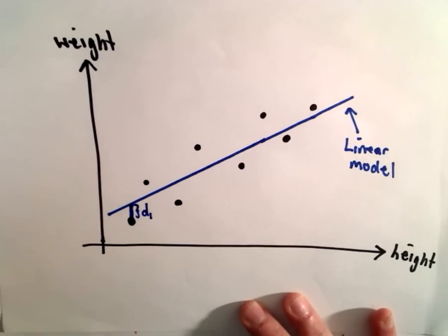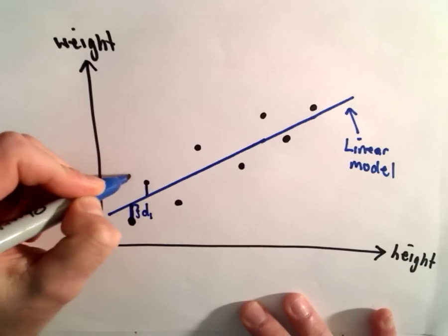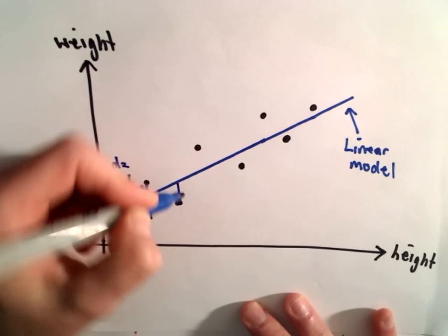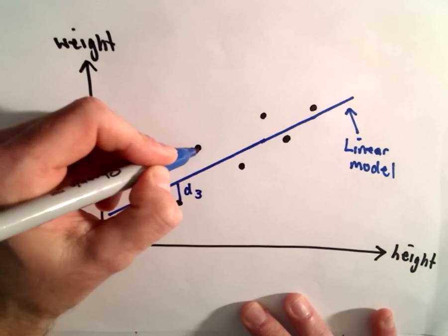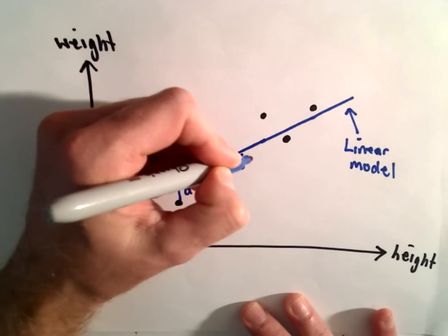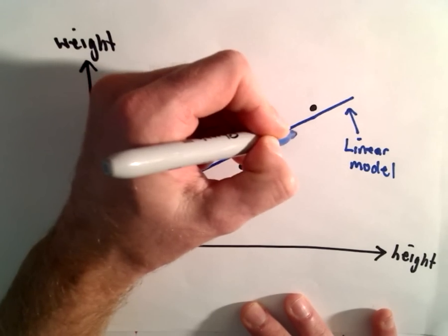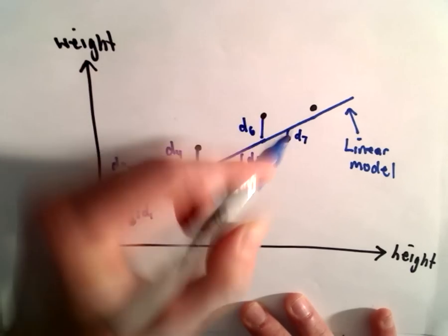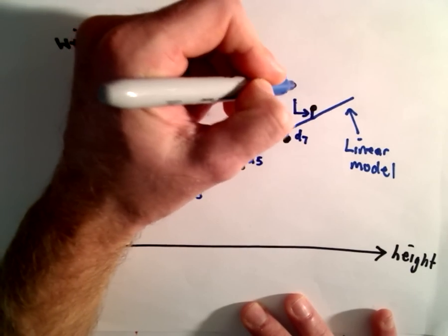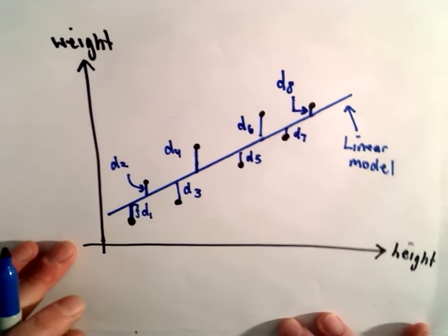And then we do the same thing for the next point, so there's again some vertical distance, let's call that d2. Then we look at the next distance d3, then we've got another little vertical distance d4, d5, little d sub 6, this is another distance d sub 7, so the distance from our seventh point, and last but not least we have the distance from the eighth point. So I've got all of these distances.